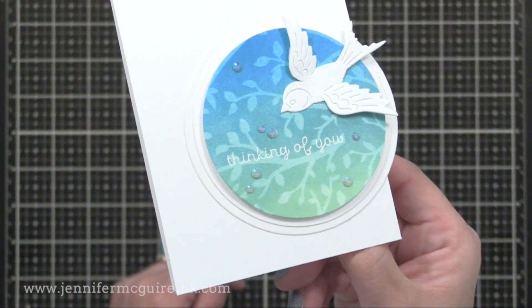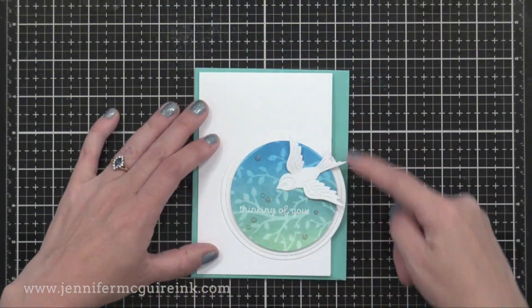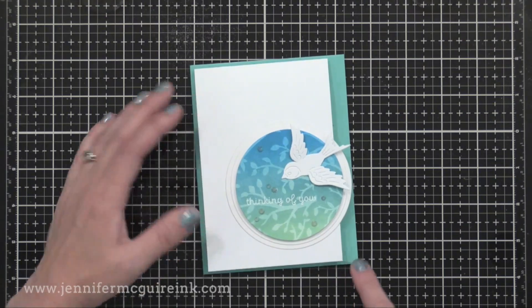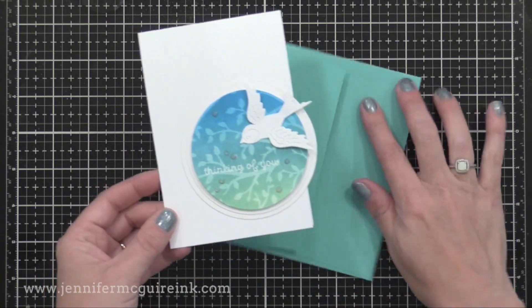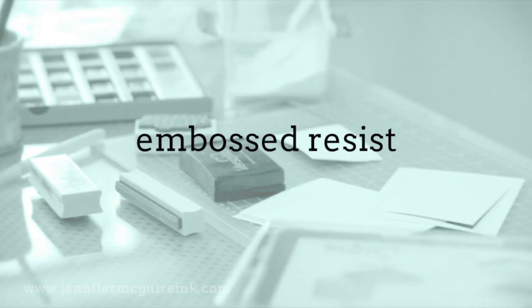Here you can see the final card. I put some dimension, some dimensional adhesive behind the wings of the bird and added some gems. And there you can see how it still fits in my coordinating envelope. So if you want a soft background, consider white pigment ink resist, and I'll link to another video here.